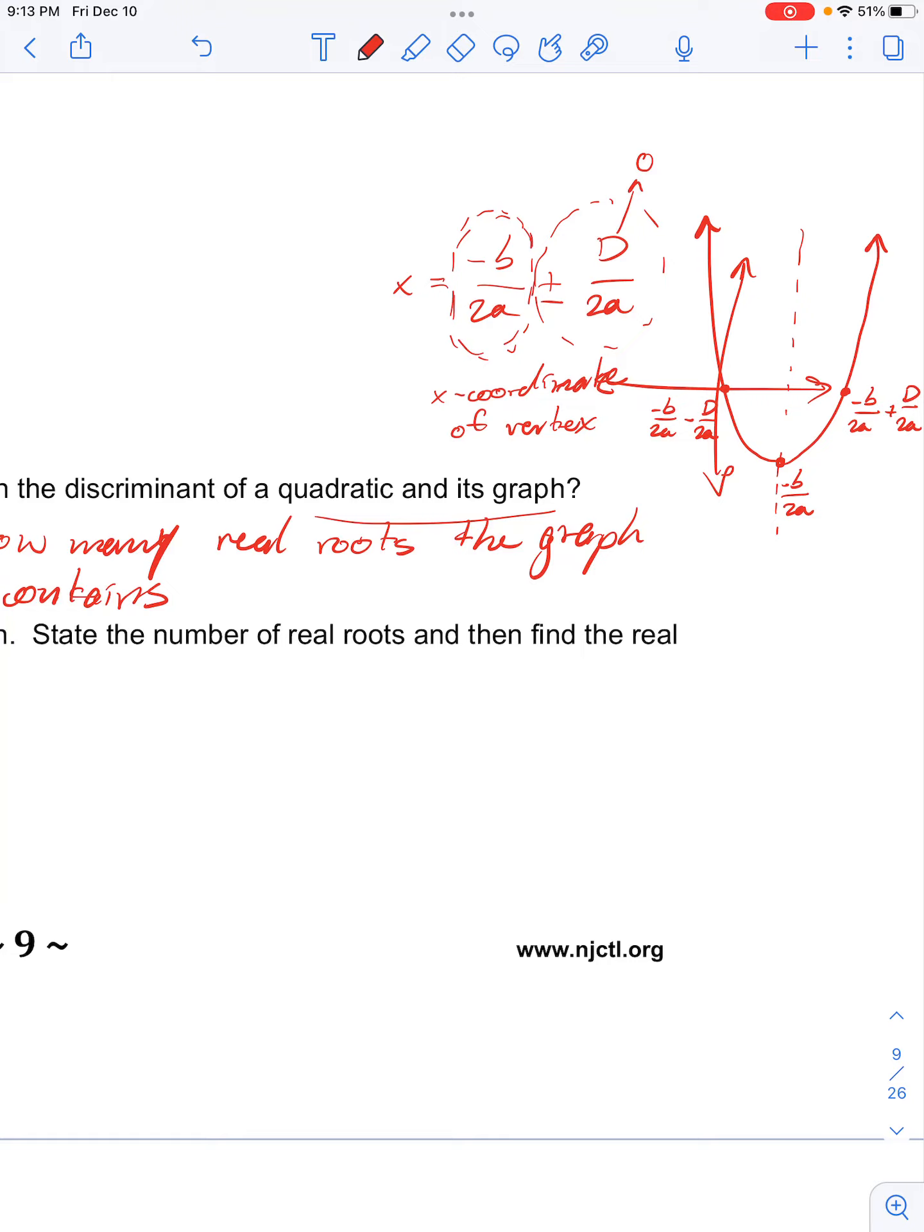If d over 2a is a positive number, then we have these plus and minus solutions, meaning we would have two real roots as the solutions to the quadratic.